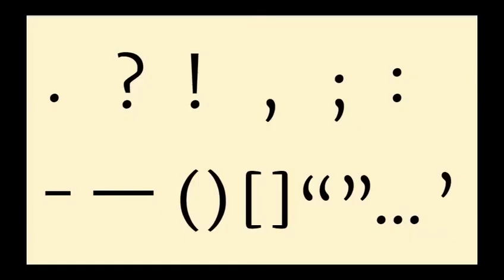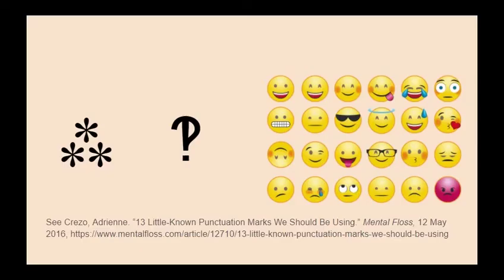Now these are the standard marks we use today. There have been other marks suggested or attempted along the way — for example, there's the asterism and the interrobang. We've also got emojis today, which are kind of like a whole new form of punctuation. Super exciting, right? But we'll be focusing on the basic standard marks in this class. Feel free to use emojis if you want.